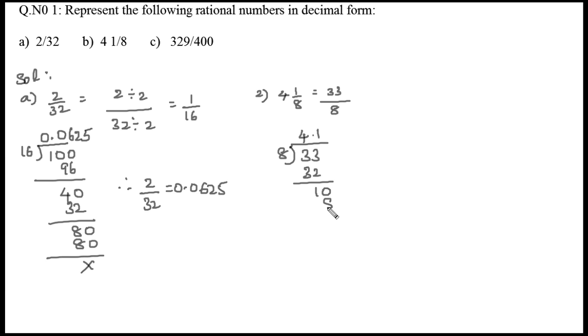Now we have 10. 8 goes into 10 once, giving 8 with remainder 2. Taking down 0 makes 20. 8 goes into 20 twice, giving 16 with remainder 4. Taking down 0 makes 40. 8 goes into 40 five times, so the remainder becomes zero. Therefore, the decimal representation of 4 1/8 is 4.125.